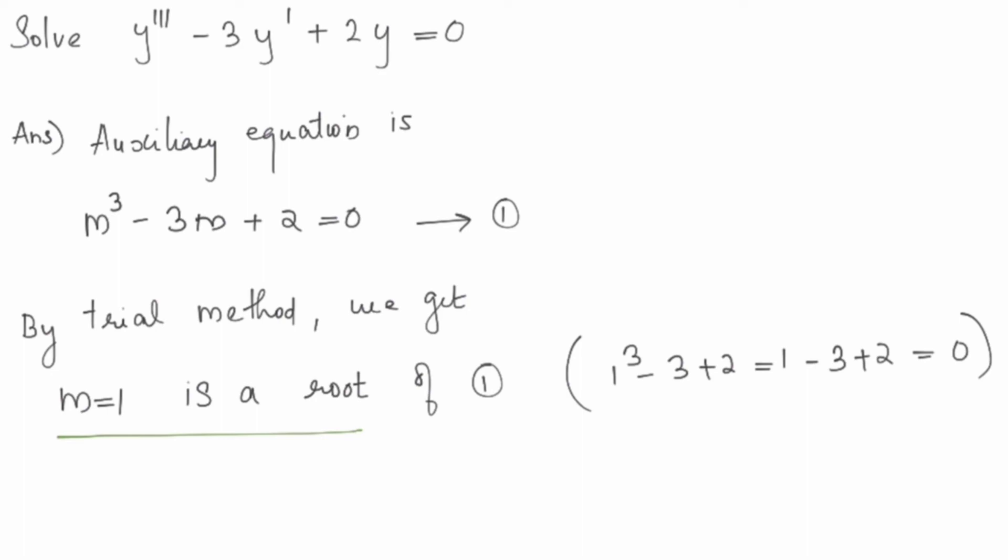We substitute m equals 1 into the auxiliary equation: 1³ - 3(1) + 2 equals 0, which is satisfied. So m equals 1 is a root. Since it is a third-order equation, we have 3 roots total. We have found one root; we divide to find the others.